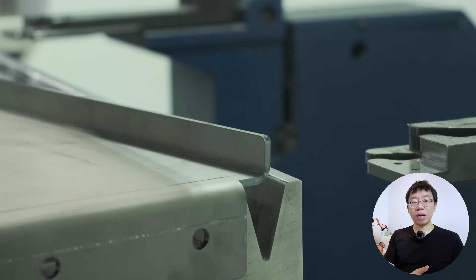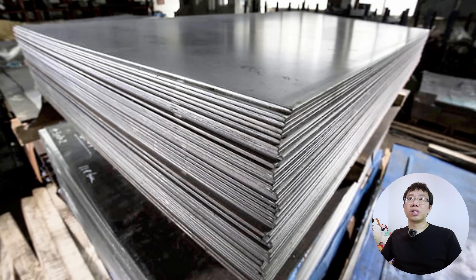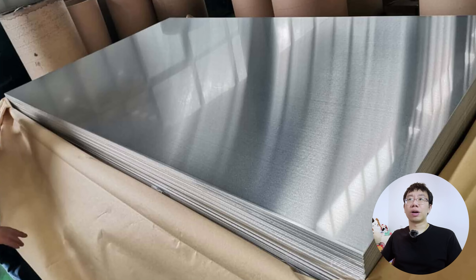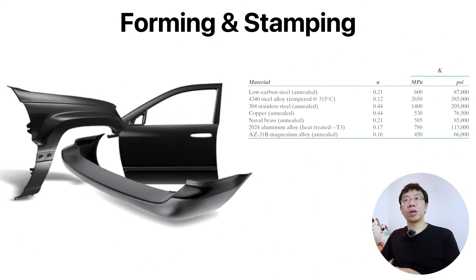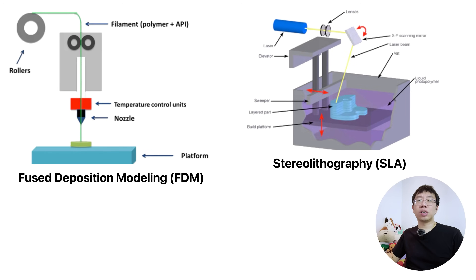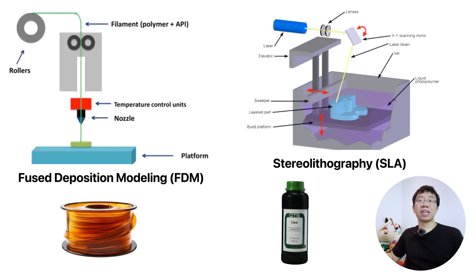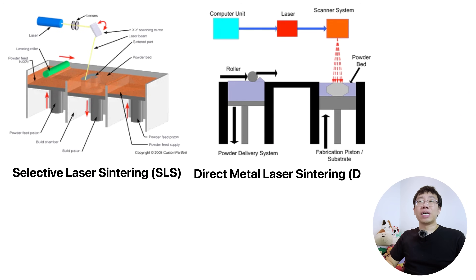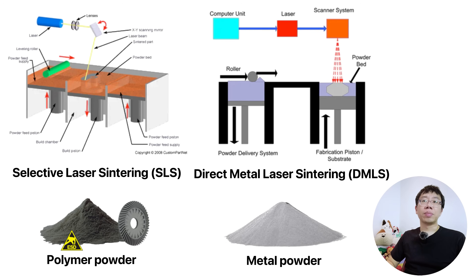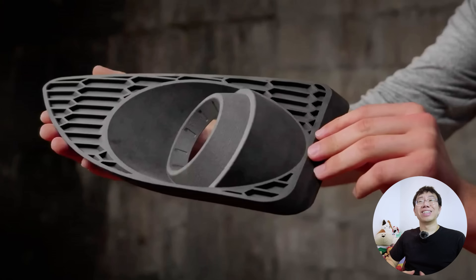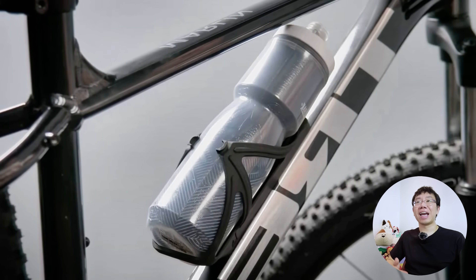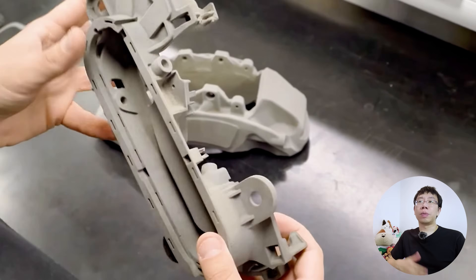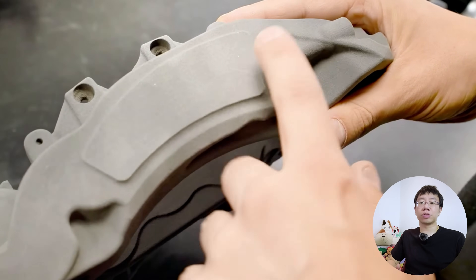Forming and stamping rely on the ductility of metals. Low carbon steels and certain aluminum grades are preferred here. If you're designing a car body panel, you need a material with a high work-hardening exponent so it can be stretched without tearing. Additive manufacturing, aka 3D printing, leverages several different technologies. FDM and SLA use polymers for prototyping or creating low-stress jigs. SLS and DMLS use metal powders like titanium 6Al-4V or stainless steel 316L — selected for geometry-first designs and end-use parts with internal cooling channels or topology-optimized brackets that are virtually impossible to machine or cast.